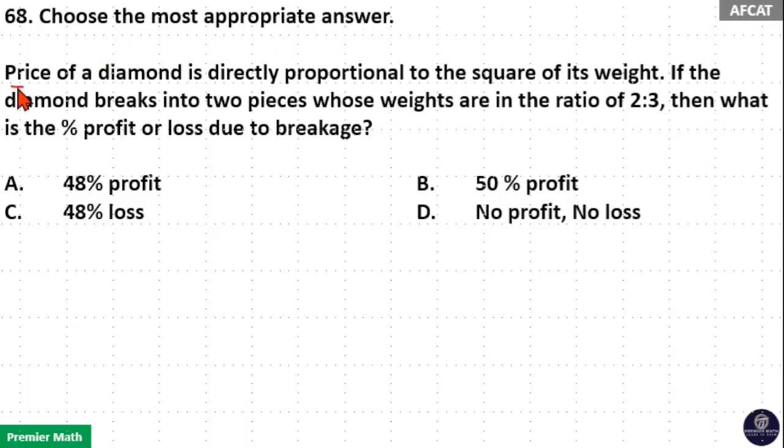Choose the most appropriate answer. Price of a diamond is directly proportional to the square of its weight. If the diamond breaks into two pieces whose weights are in the ratio 2 is to 3, then what is the percentage profit or loss due to breakage?